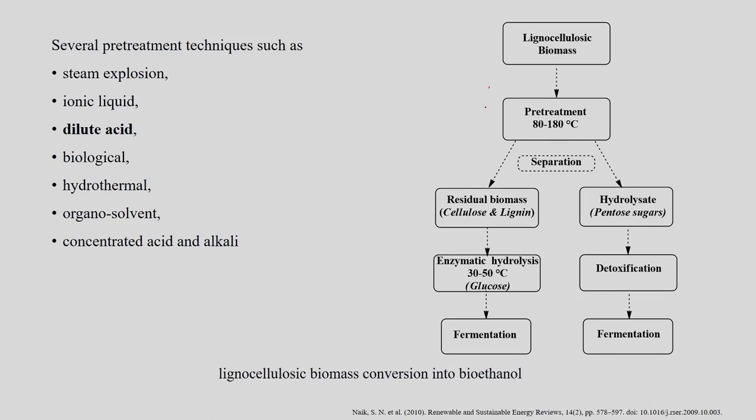The number of steps required for conversion of lignocellulosic biomass to ethanol is relatively more than for starch and sucrose-containing material. Pretreatment is the common step for any lignocellulosic material, with temperature requirements varying from 80 to 180 degrees Celsius depending on the material's composition. The most preferred technology is dilute acid pretreatment followed by enzymatic hydrolysis of the residual biomass to produce sugars.